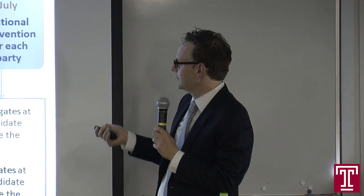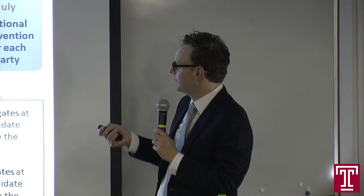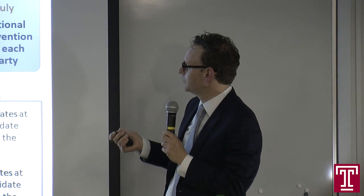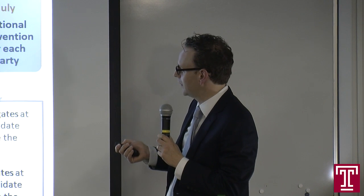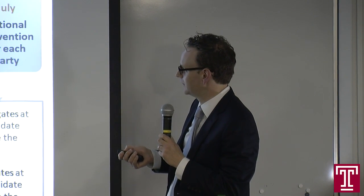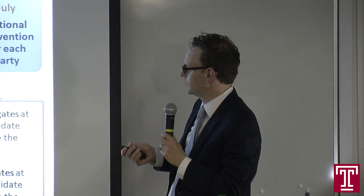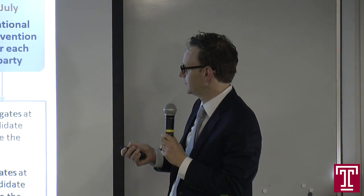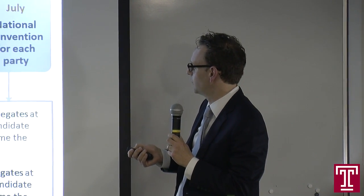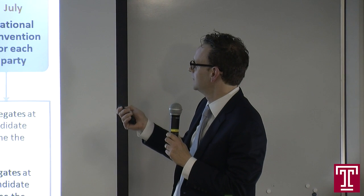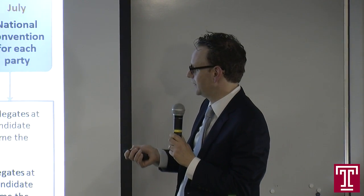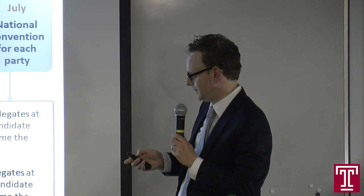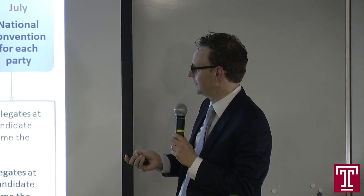Then you have the next two states — South Carolina and Nevada — followed by Super Tuesday, where a number of states vote simultaneously. Now we're in the March to June window where all the other states are voting. This leads to the convention in July.